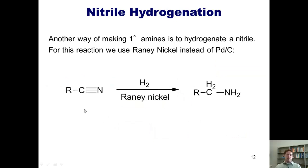Another way of making primary amines is to hydrogenate a nitrile. In order to hydrogenate a nitrile down to a primary amine, I don't use palladium carbon as I would an azide. Instead, I use hydrogen gas and Raney nickel.